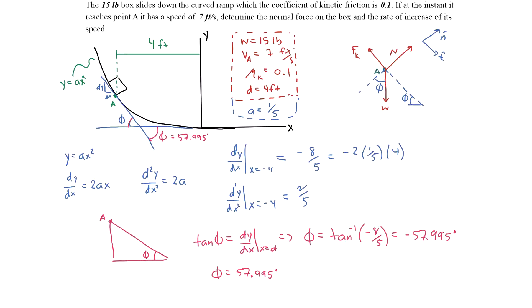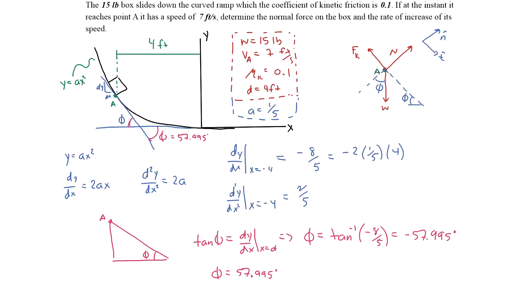If you were rigorous you'd notice that discrepancy and account for the negative sign by recognizing clockwise rotation. Now that phi is defined, we can sum the forces in the normal direction using our free body diagram to find the normal force.